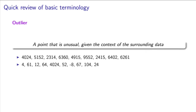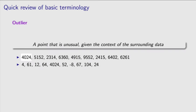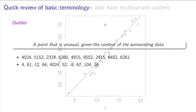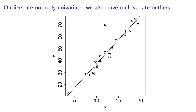In the first vector, the number 4024 is nothing special. In the second vector, that same value sticks out dramatically. Here is a different example. On this scatter plot, we can see an outlier marked with a square point.